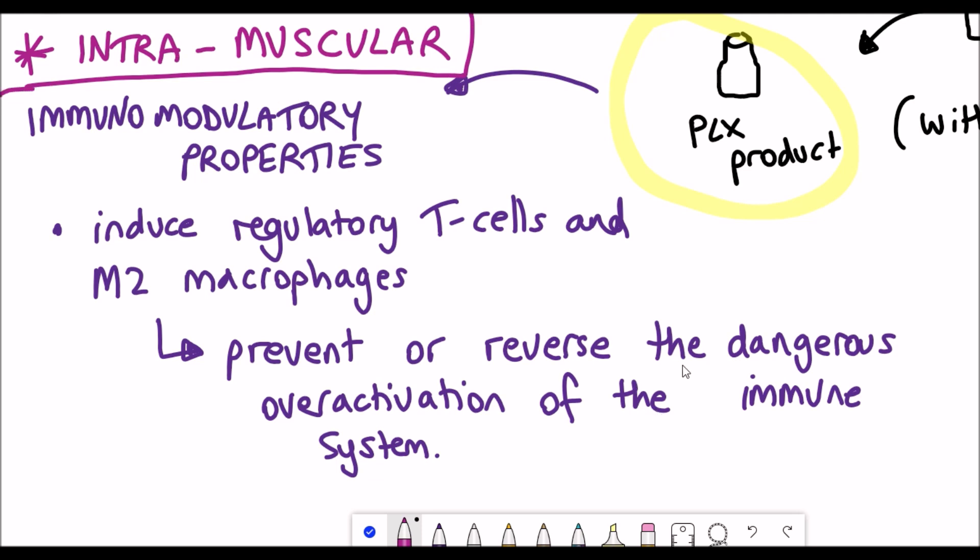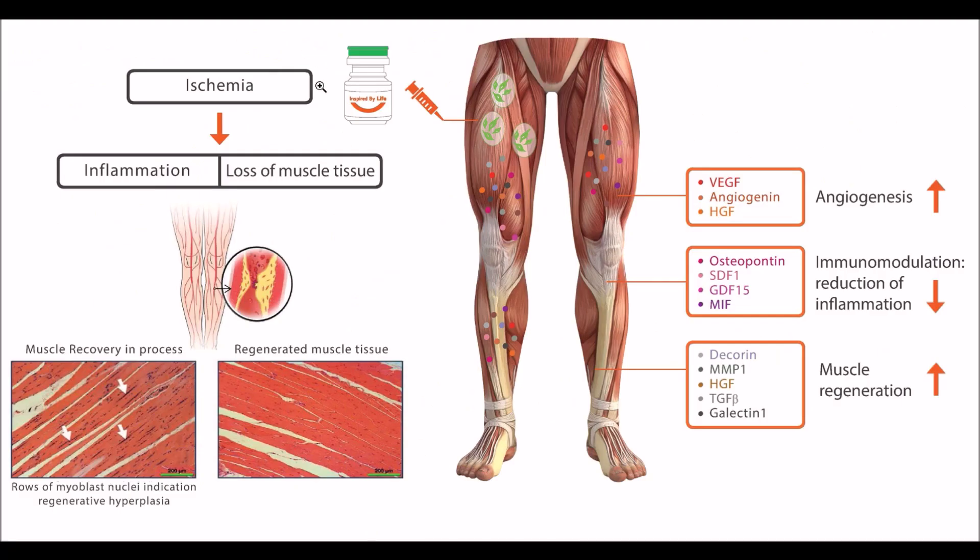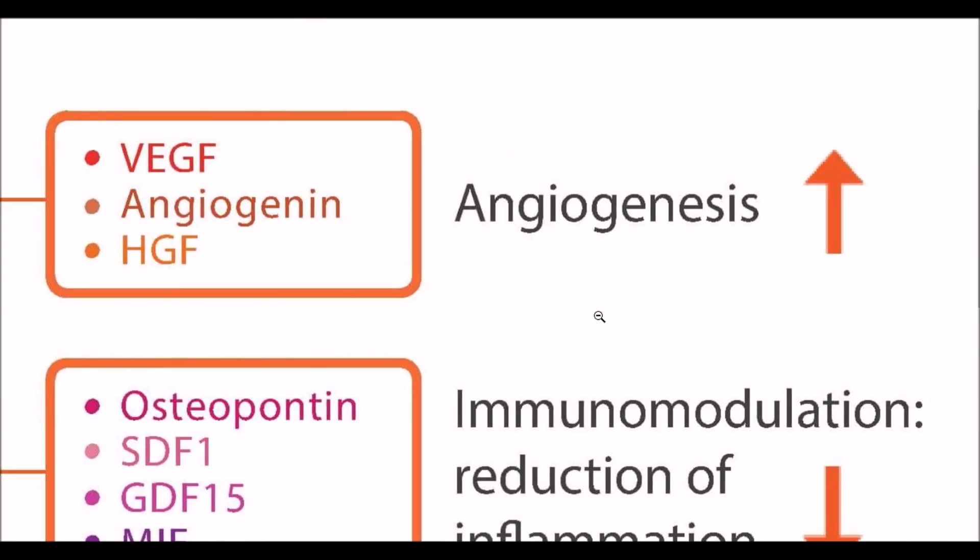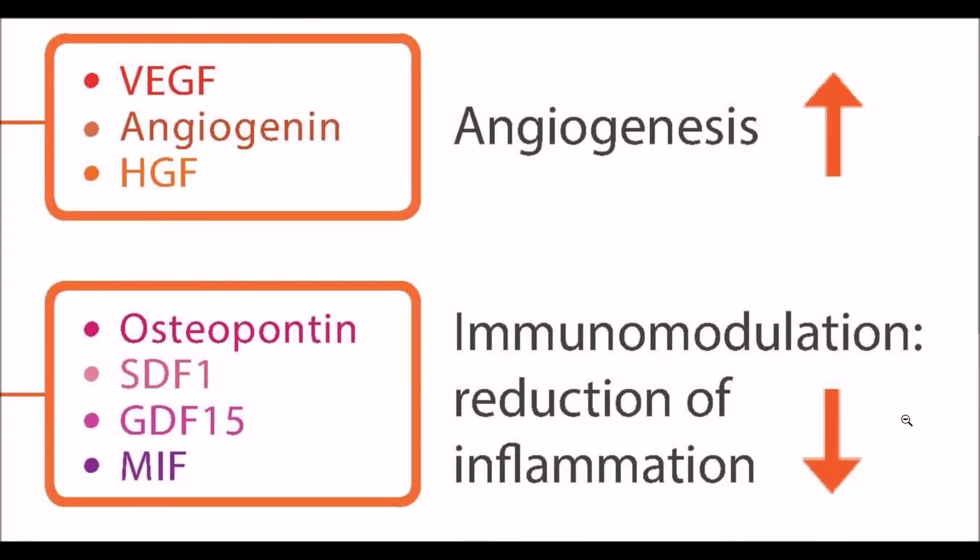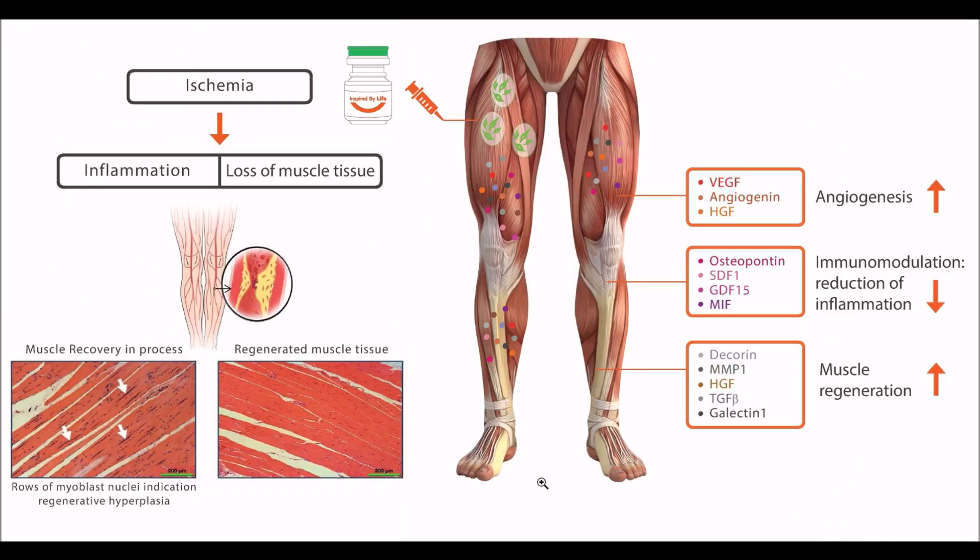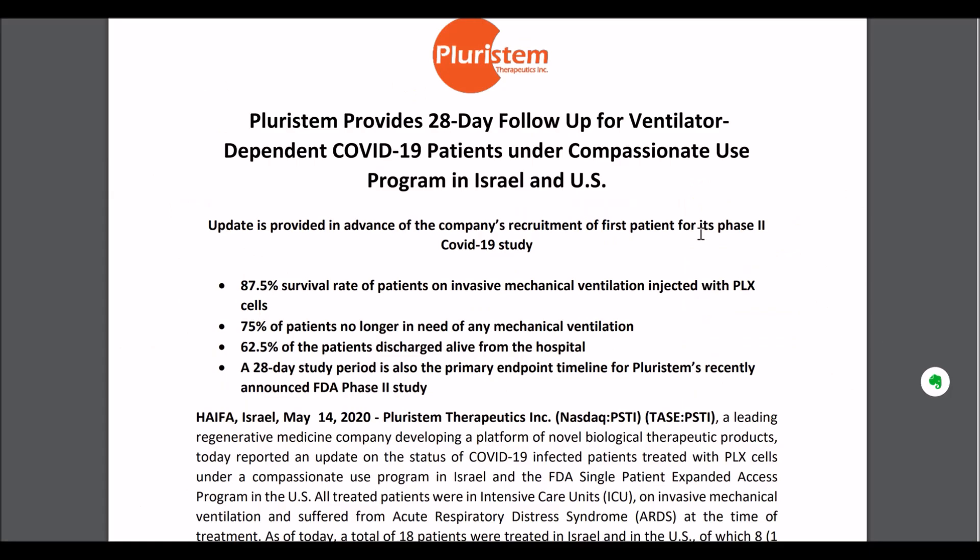On the website of either company you'll find more information and nicer diagrams than my scribbly writing. I took this image from the Pluristem website showing the intramuscular injection of these Pluristem cells. Due to these secreted factors listed here, the idea is it has a systemic impact on the body which hopefully could alleviate the symptoms that occur in COVID-19 patients.